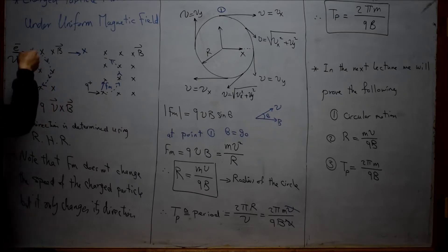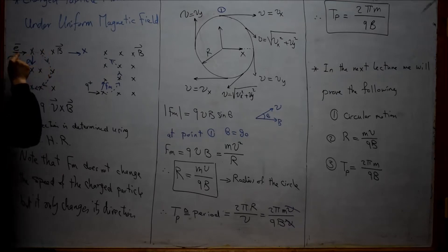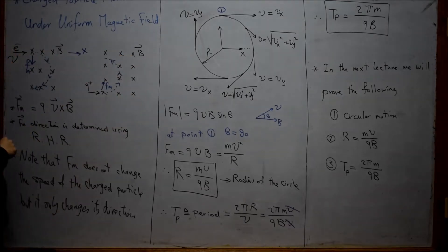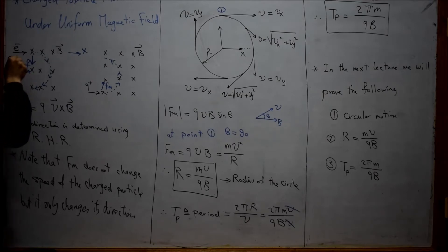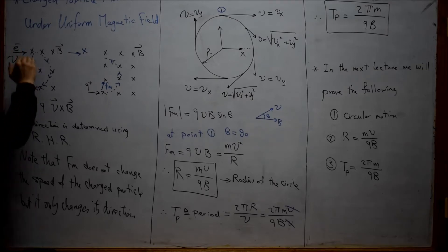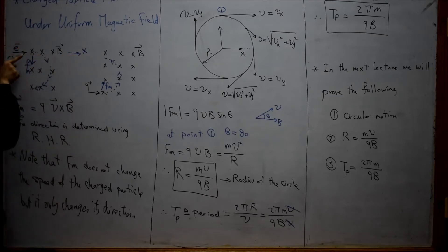So the force will be directed downward, opposite to the direction of the thumb. In this case, the electron — if there is no electric field — was moving in the x direction. The magnetic force wants to take this electron down in the negative y direction. So instead of going in x direction only or y direction only, the electron will move in between.